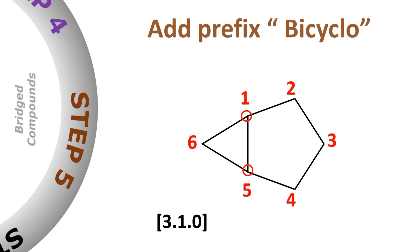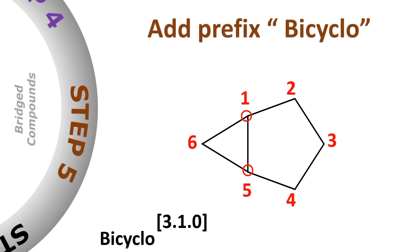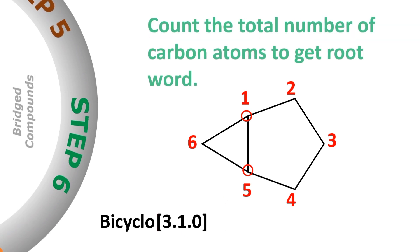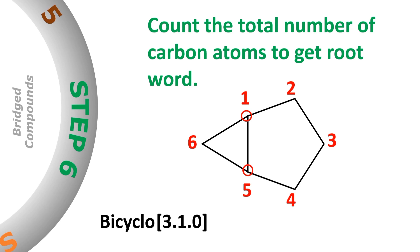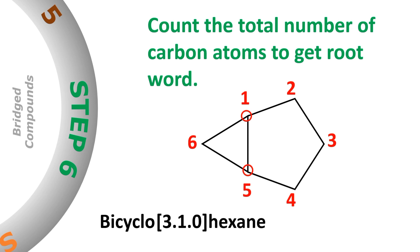The number of carbon atoms in the bridges are written in descending order, separated by dots. Since this cyclic system has two cycles, we will add the prefix 'bicyclo.' The numbers written in the square bracket are called bicyclic descriptors. The next step is to count the total number of carbon atoms present in the bicyclic system to get the suffix or root name for the molecule. The name of this molecule is bicyclo[3.1.0]hexane.